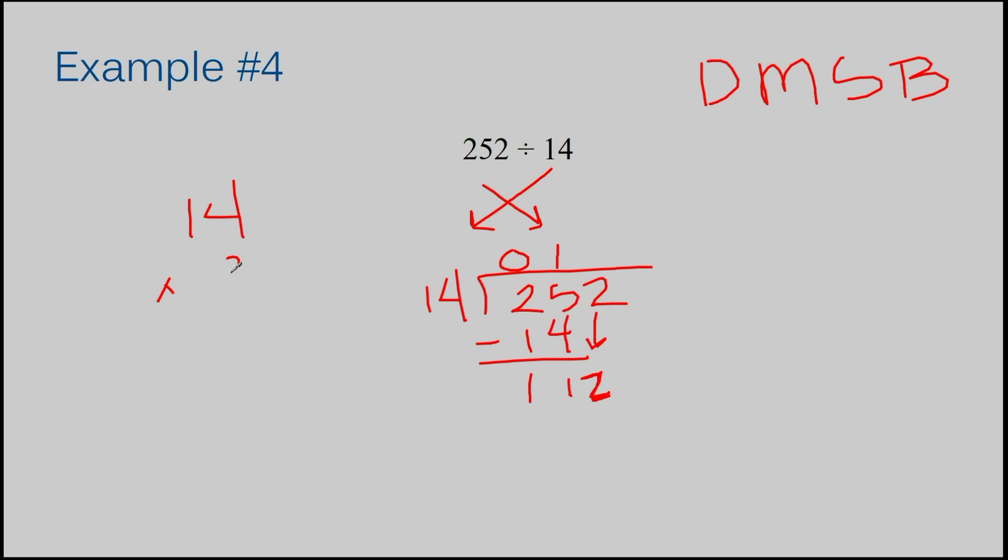Multiply 14 times 8. When I do this I get 4 times 8 is 32. 8 times 1 is 8, plus my 3, I get 11. That's exactly what I need. 14 times 8 is 112. So when I subtract I get 0.